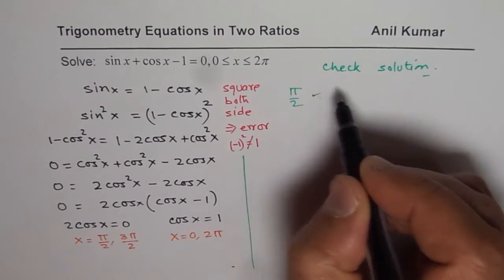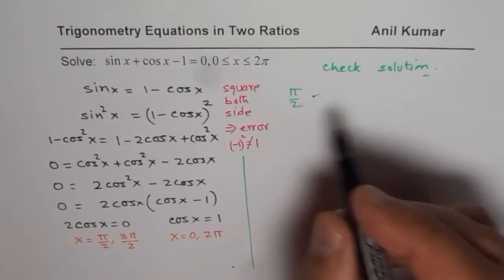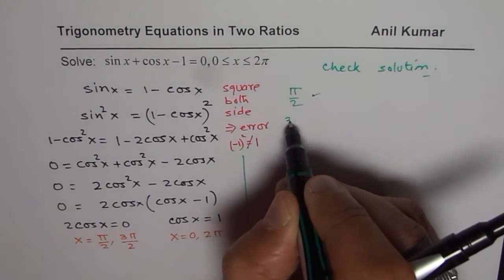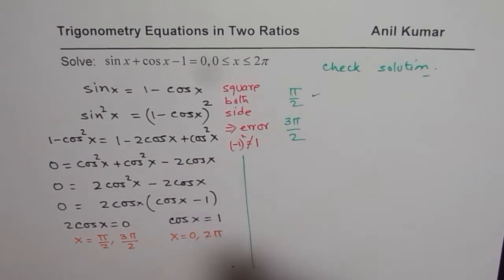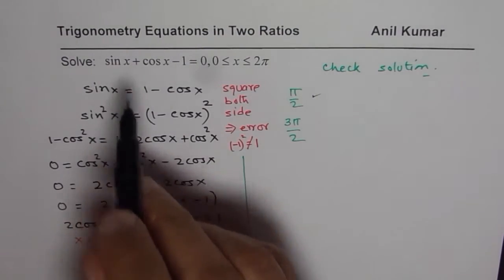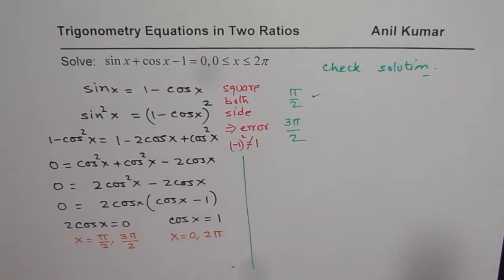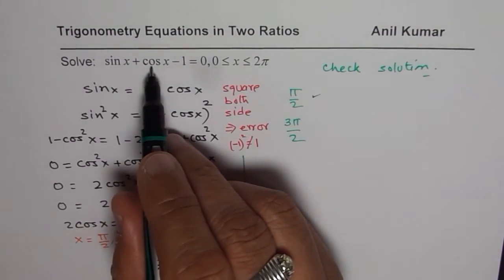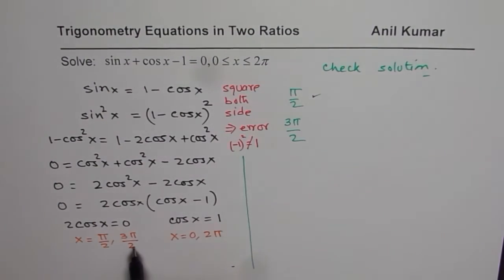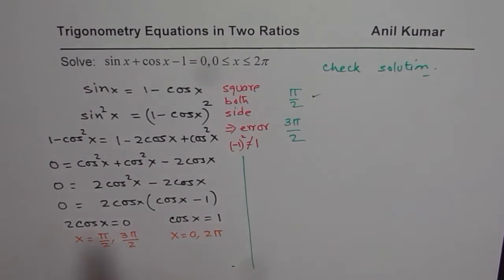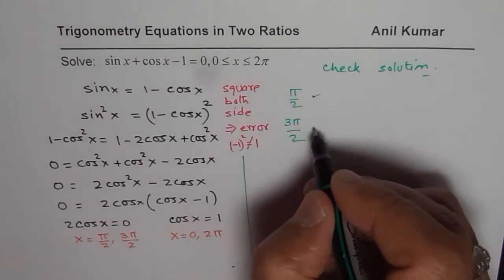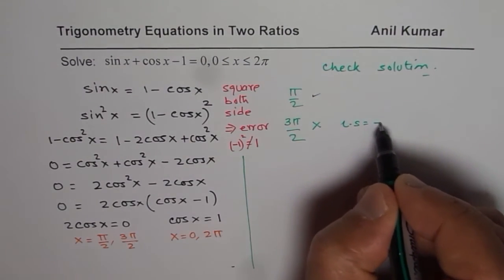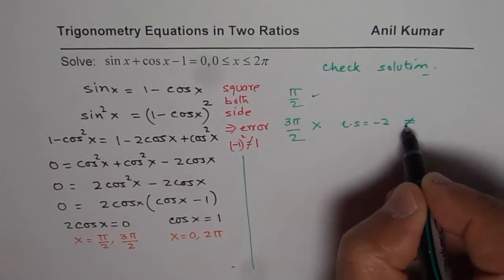So 1 minus 1 is 0. It works. If I write 3 pi by 2, then sin of 3 pi by 2 is minus 1. So that minus 1 and cos of 3 pi by 2 is 0. But sin is minus 1. So that does not work. So we get on the left side, left side is equals to minus 2 and it is not equal to 0.